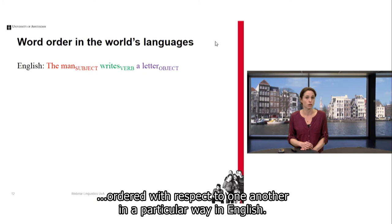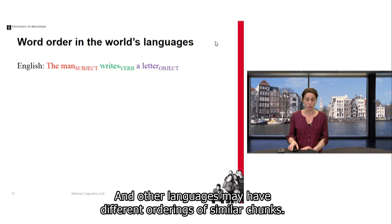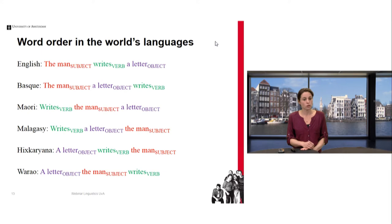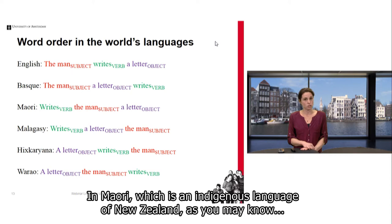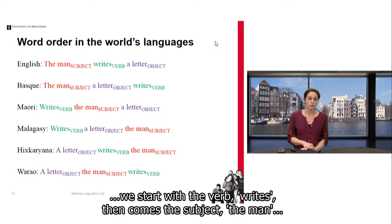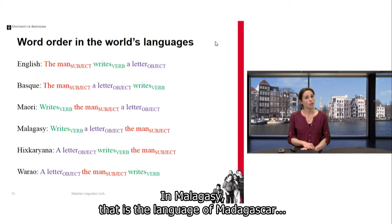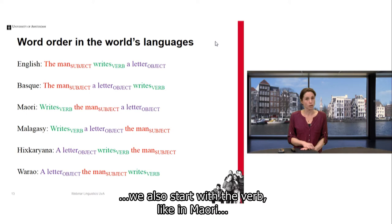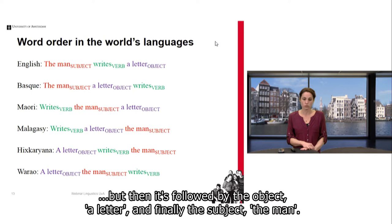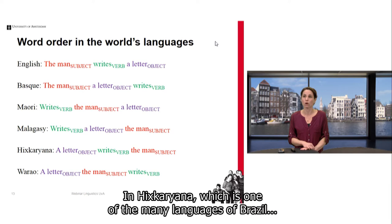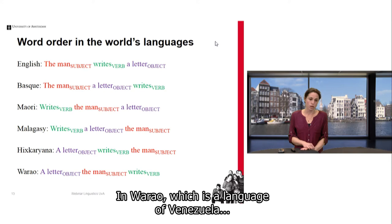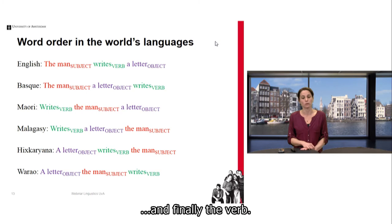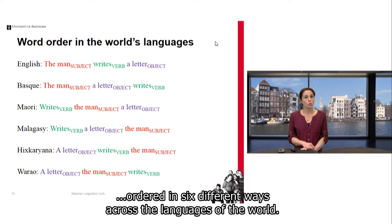In Basque, the subject comes first, then the object 'a letter', and finally the verb 'writes' at the very end. In Maori, an indigenous language of New Zealand, we start with the verb, then the subject, then the object. In Malagasy, the language of Madagascar, we also start with the verb, but it's followed by the object and then the subject. In Hixkaryana, one of the many languages of Brazil, we start with the object, followed by the verb, and then the subject. In Warao, the language of Venezuela, we start with the object, followed by the subject, and finally the verb. So we have three chunks — subject, verb, object — ordered in six different ways across the languages of the world.